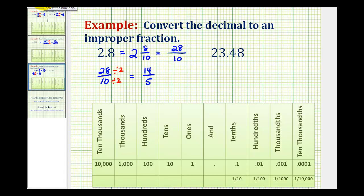Looking at the second example, notice this 8 here is in the hundredths place value. So we would read this as 23 and 48 hundredths. So as a mixed number we would have 23 and 48 over 100.